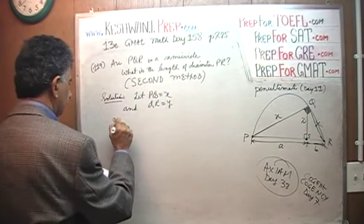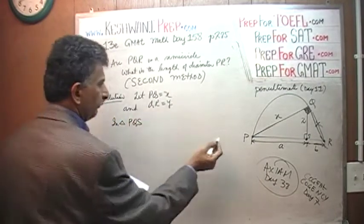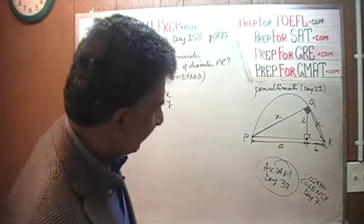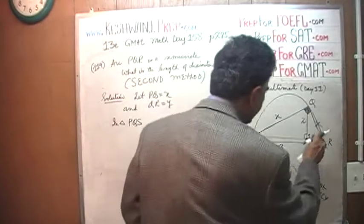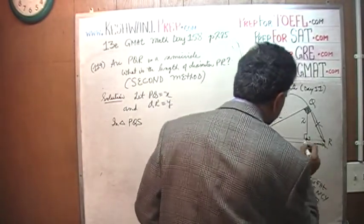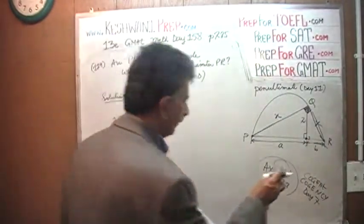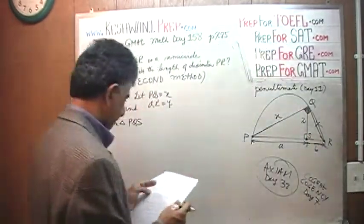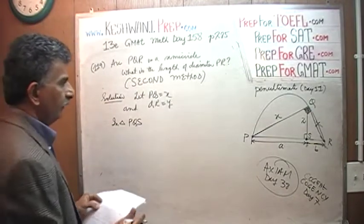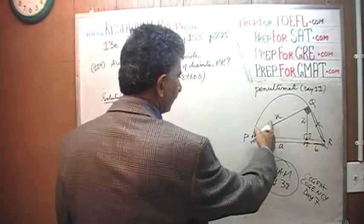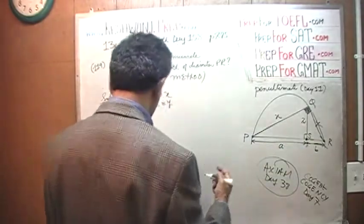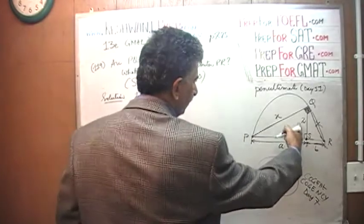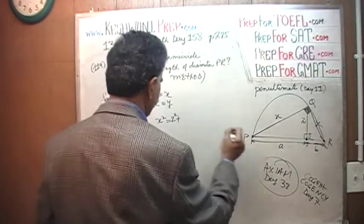So in triangle PQS - this part is what I am calling S here, it is something that is not in the book, we are giving it a name, we are calling this point S. In triangle PQS, X squared plus 2 squared would equal A squared, because X squared, which is the hypotenuse, will equal 2 squared plus A squared.